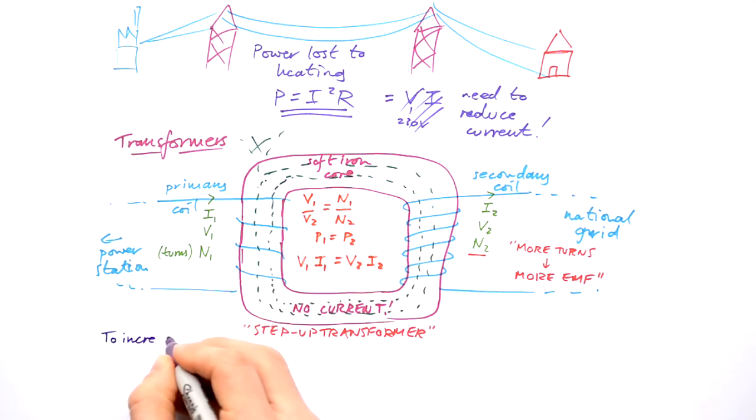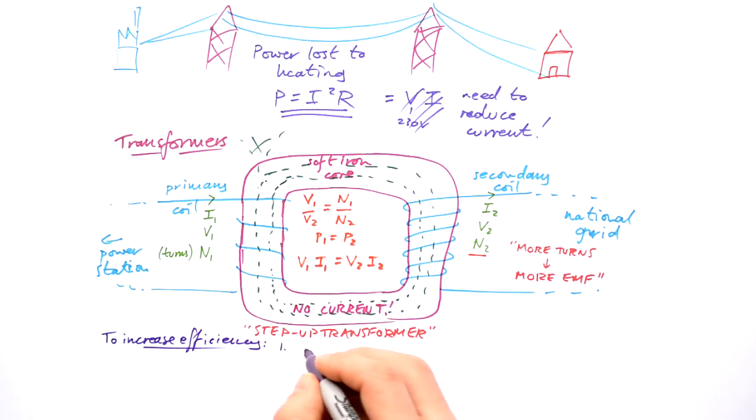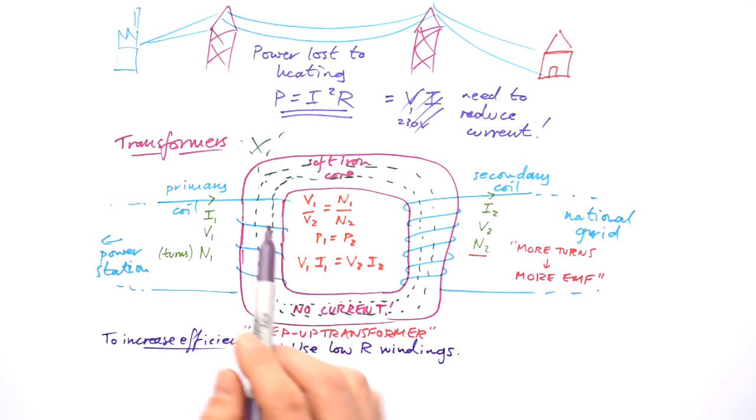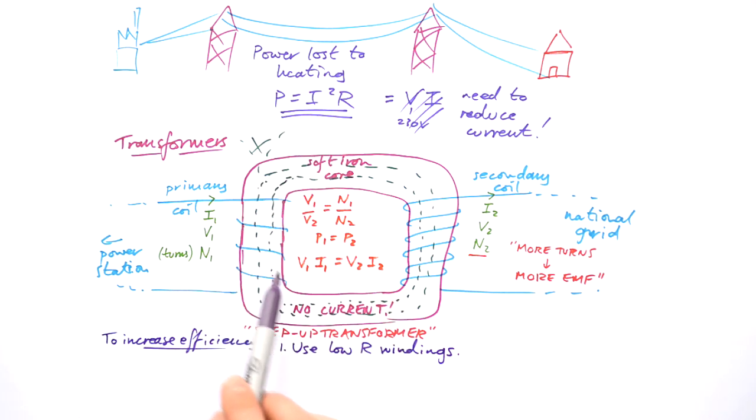So to increase efficiency of a transformer, we can do three things. We can use low resistance windings for starters. I mean, that makes sense, doesn't it? So we've got as little P equals I squared R happening in the coil itself.